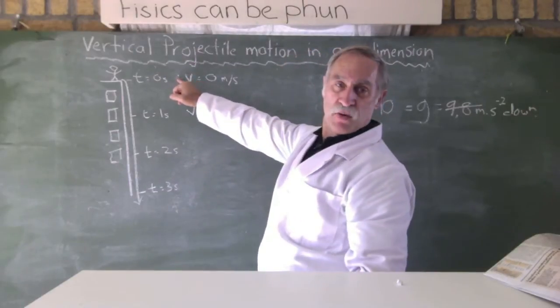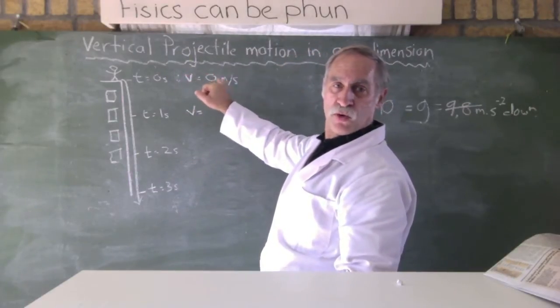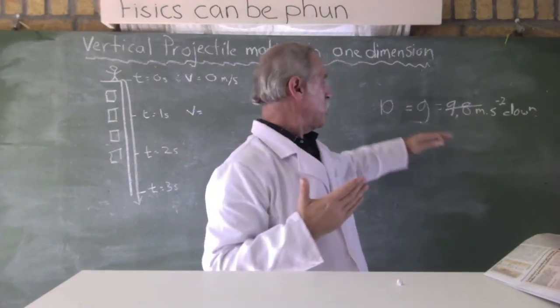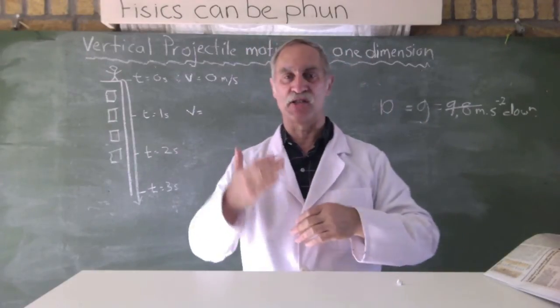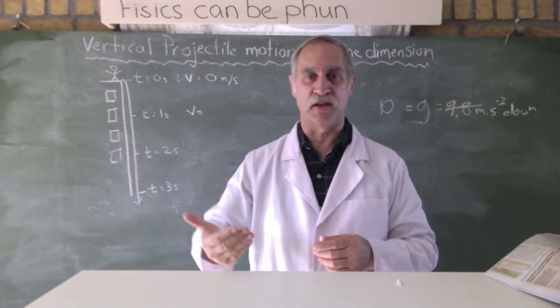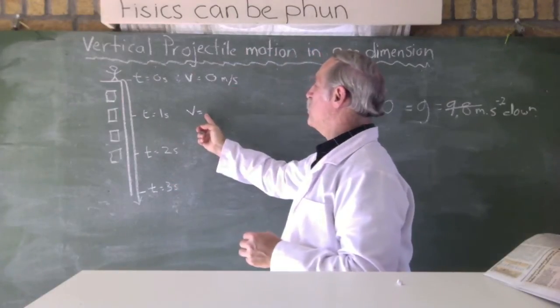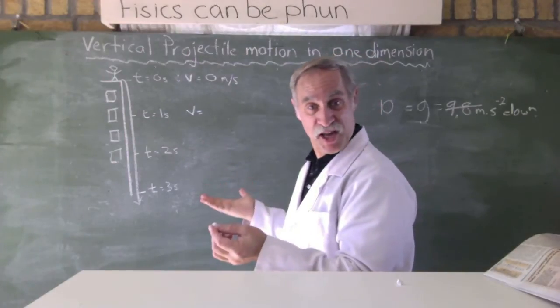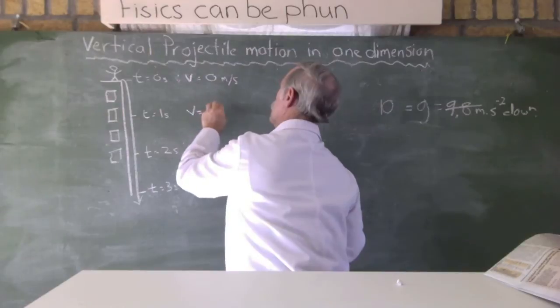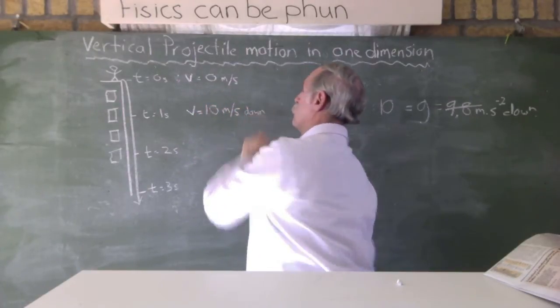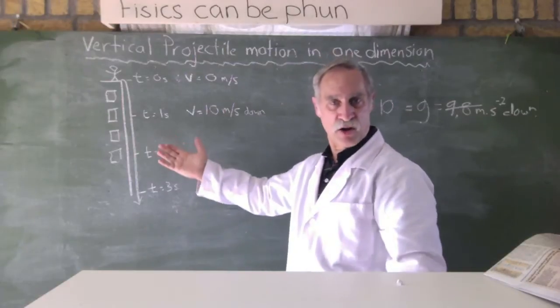So, at time T equals naught, its velocity was naught. After one second, what does this value mean? All it's telling us is that every second, it adds 10 to its velocity. So, what will the velocity be here after at time T equals one second? It will be, obviously, 10. 10 meters per second down. And how hard was that?